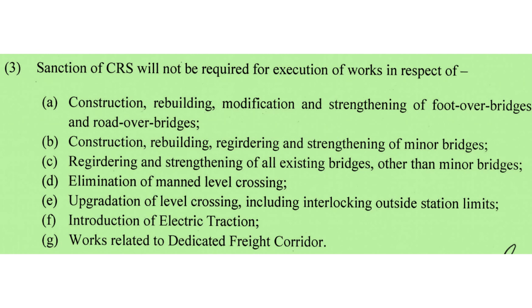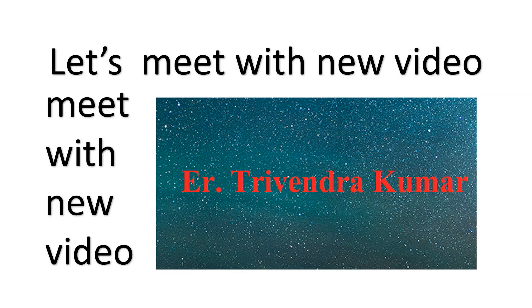Sub-para 3: sanction of CRS will not be required for the execution of works in respect of the following — construction, rebuilding, modification and strengthening of FOB and ROB; construction, rebuilding, regirding and strengthening of minor bridges; regirding and strengthening of all existing bridges other than minor bridges; elimination of manned level crossings; operation of level crossings including interlocking outside station limits; introduction of electric traction; and works related to Dedicated Freight Corridor.